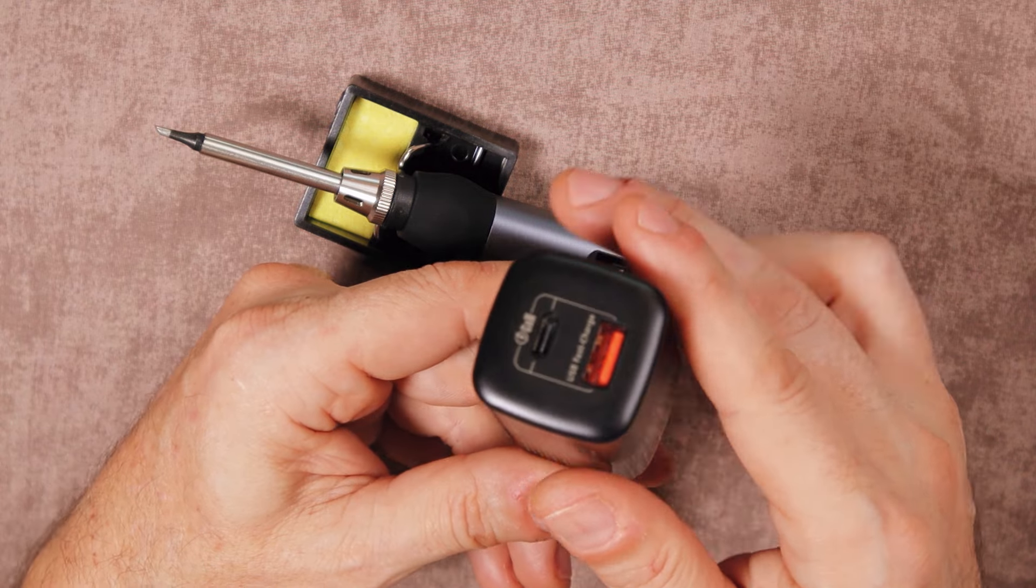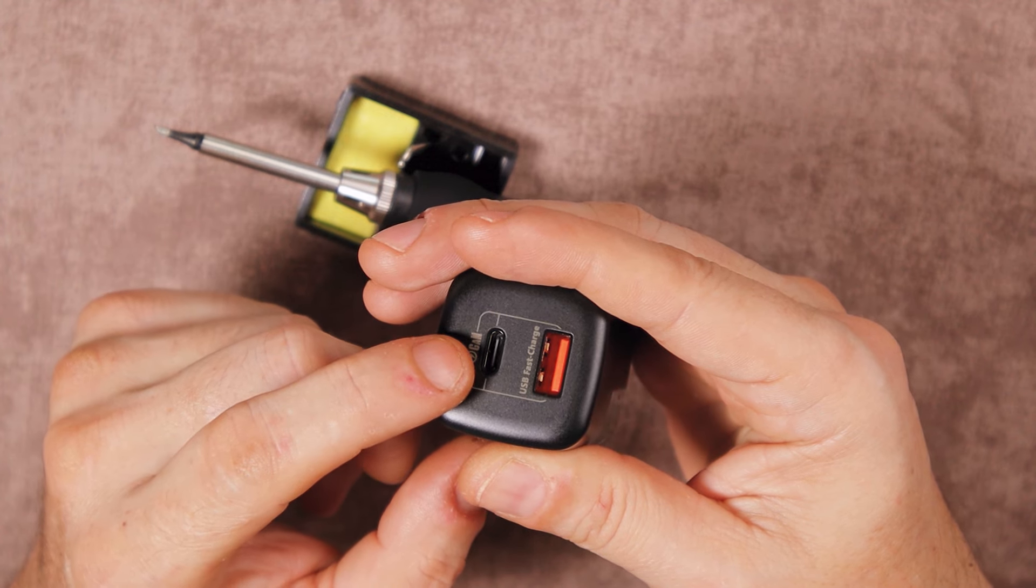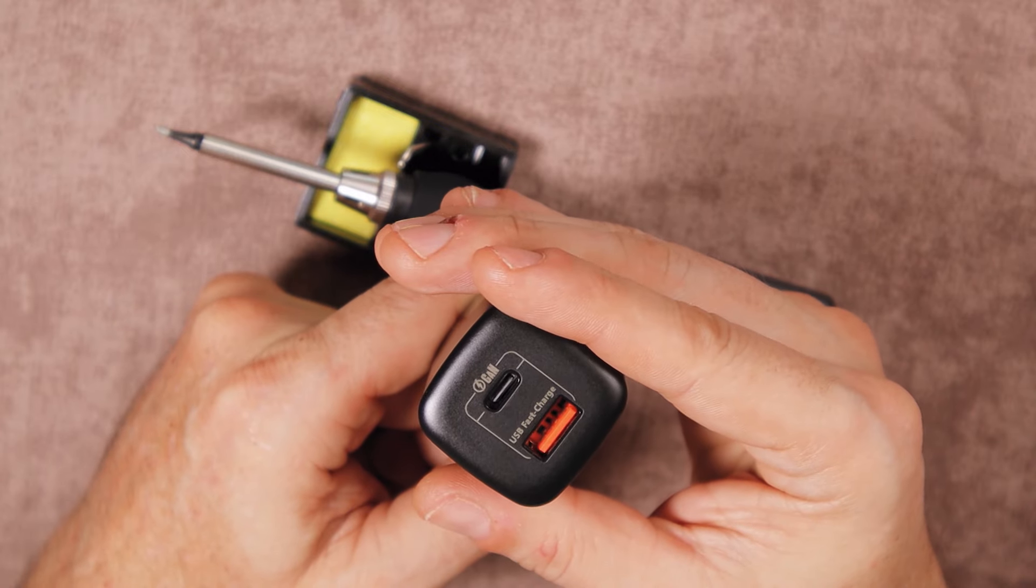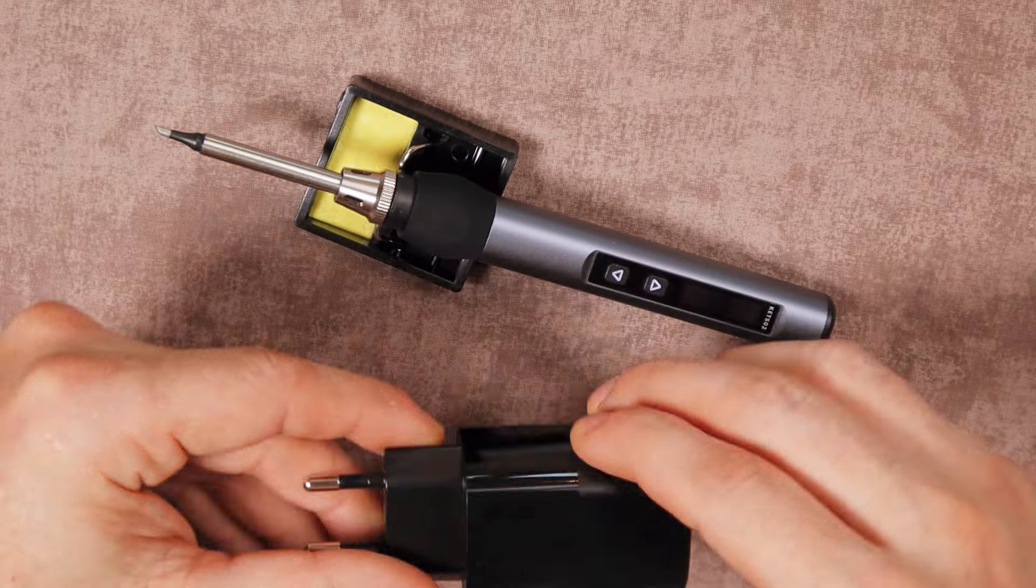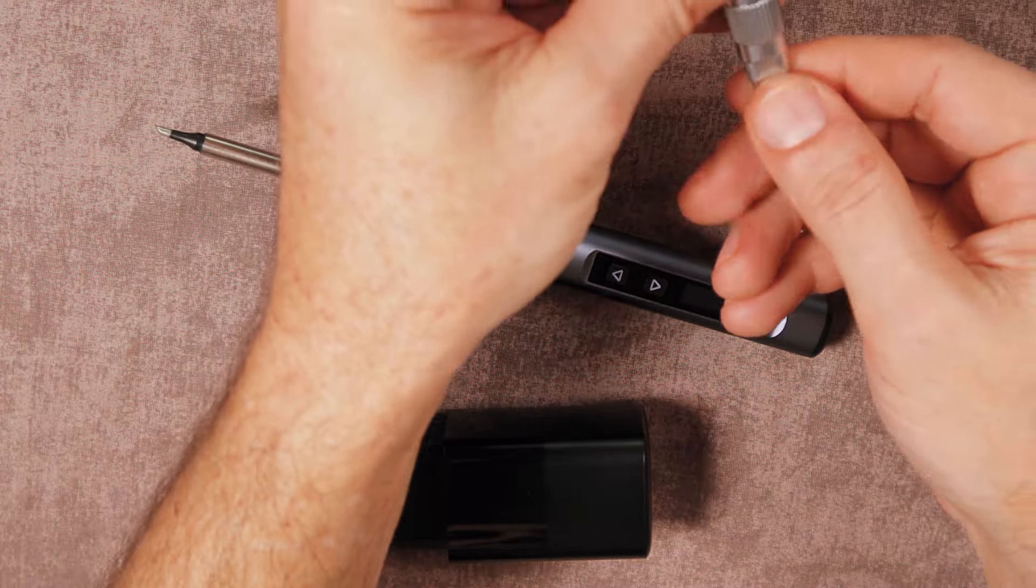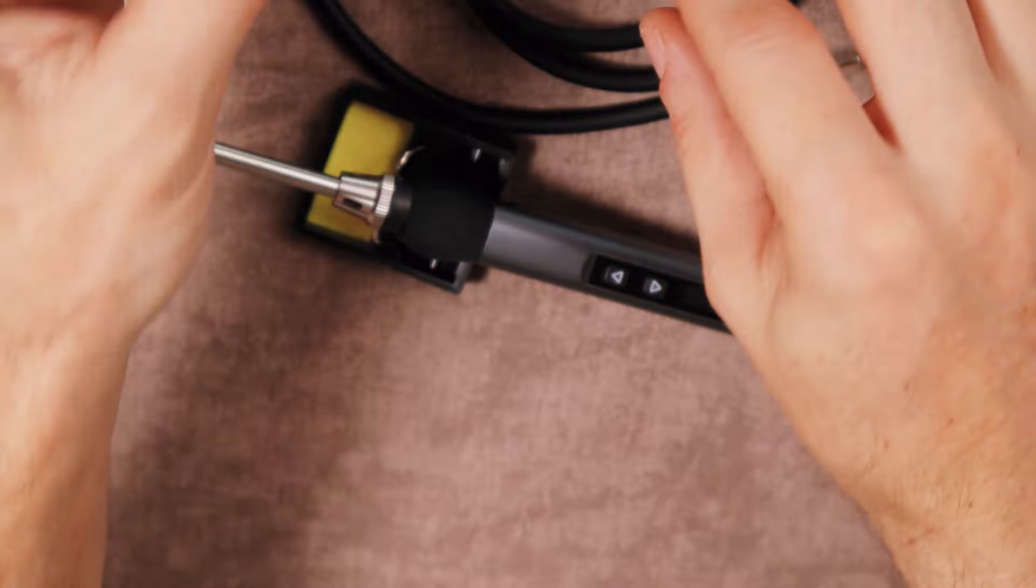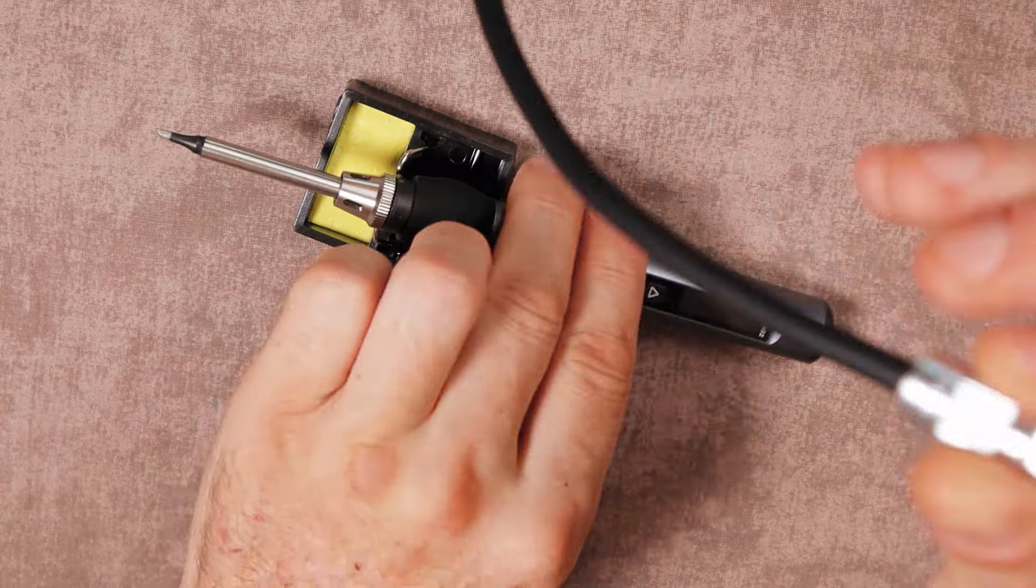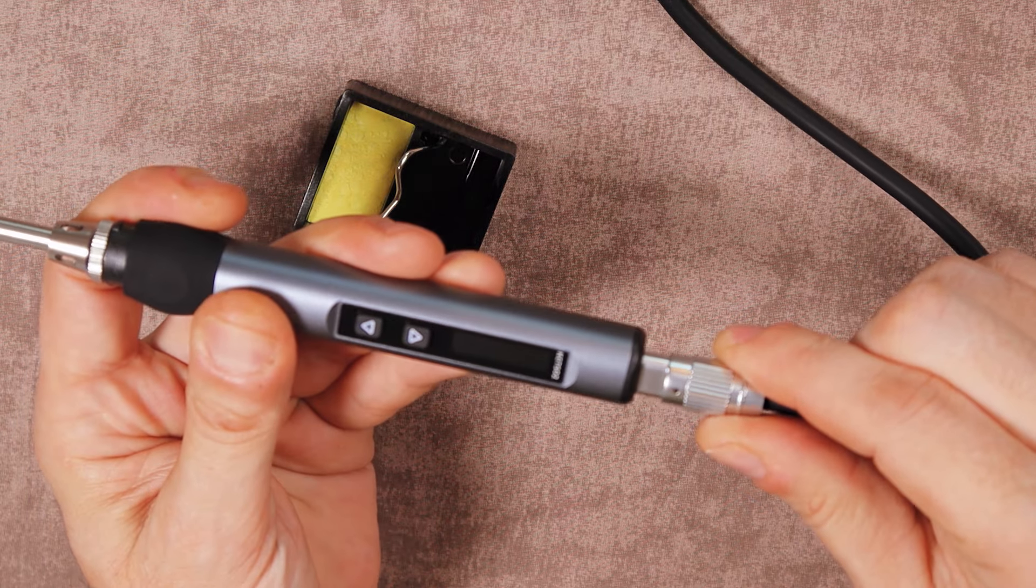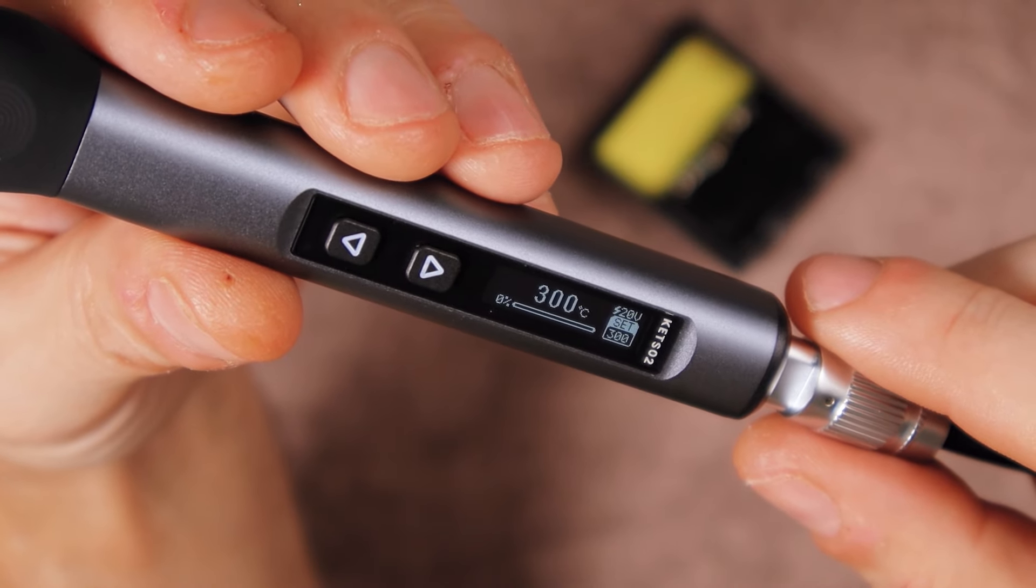Over here you have a USB-C type charging port for a cable, and here you have a regular USB charging port. Anyway, to power your soldering iron, basically you would connect your cable to the charger, plug it in, and then you will connect the other end of the cable into the soldering iron. Alright, so I started powering the soldering iron.